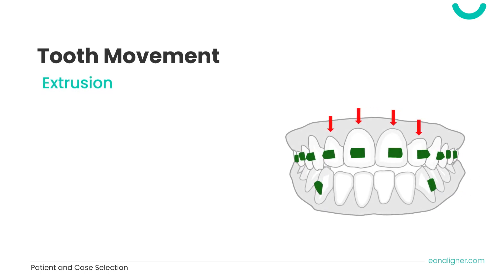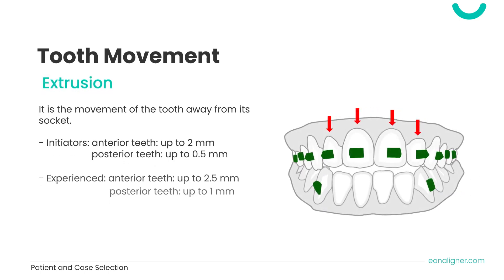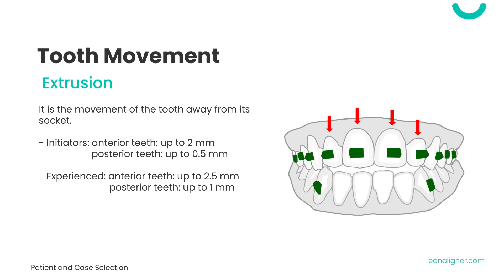Extrusion is the movement of the tooth away from its socket. Initiators can extrude anterior teeth up to 2 millimeters and posterior teeth up to 0.5 millimeters. For experienced doctors, extrusion of up to 2.5 millimeters in anterior teeth and up to 1 millimeter in posterior teeth is achievable. Teeth requiring alignment should have that planned first before planning the extrusive movement. Evidence shows extrusion of incisors to be accurate.